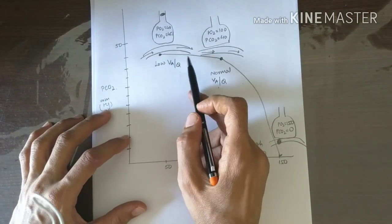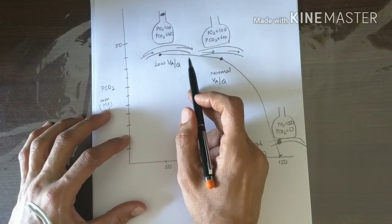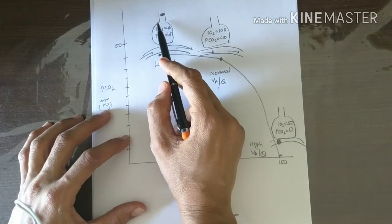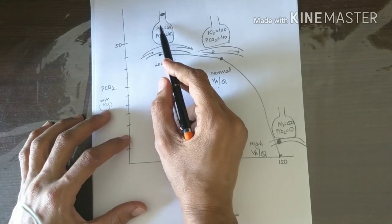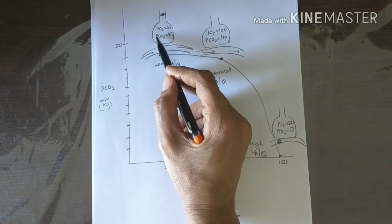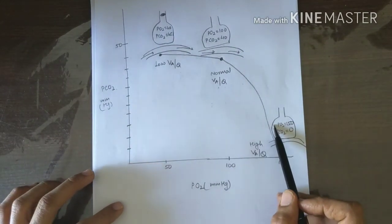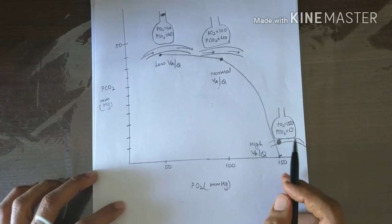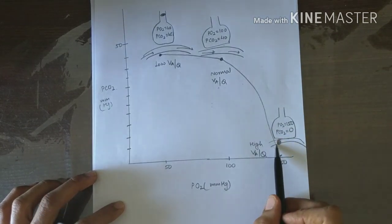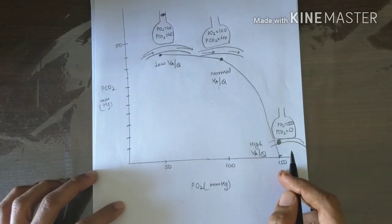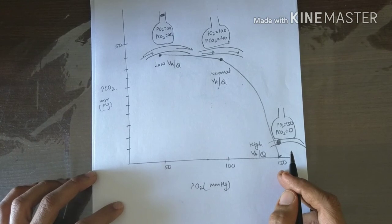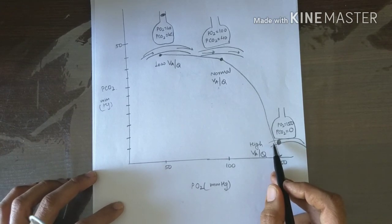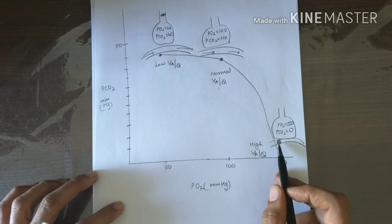Causes of uneven alveolar ventilation include obstruction due to bronchial asthma, emphysema, pulmonary fibrosis, pneumothorax, and congestive heart failure. Causes of uneven pulmonary perfusion include anatomical shunts (as in Fallot's tetralogy), pulmonary embolism (which blocks blood flow), increased pulmonary resistance in pulmonary fibrosis, pneumothorax and congestive heart failure, and regional decrease in pulmonary vascular bed in emphysema.